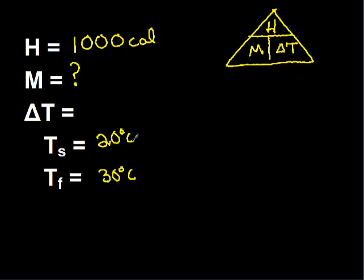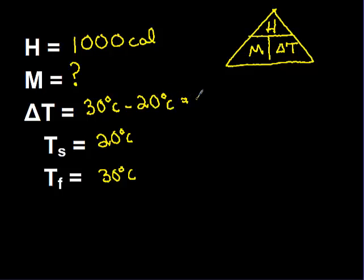Now I want to find out what my change in temperature is. Remember, change in temperature is always final minus starting. So I'm going to take my final temperature of 30 degrees Celsius and subtract my starting temperature of 20 degrees Celsius, which gives me a change in temperature of 10 degrees Celsius. That's positive because the temperature went up — final minus starting gives me that positive number.